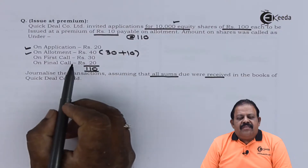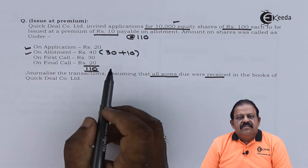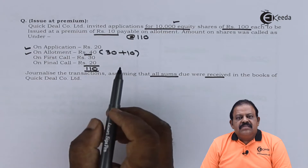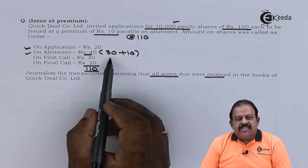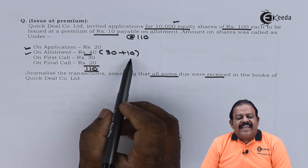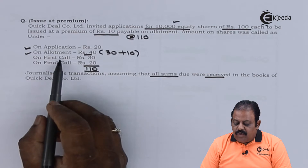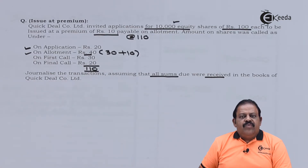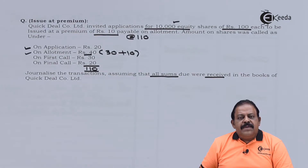Next we have the allotment stage, where we are required to adjust rupees 40 — of which rupees 30 will be applied to share capital and rupees 10 will be towards securities premium. The shareholder will be paying a total of rupees 40 on allotment. We are required to record the first entry for demanding the allotment amount including securities premium.